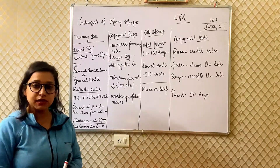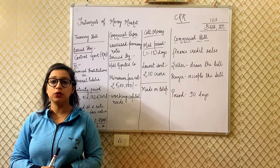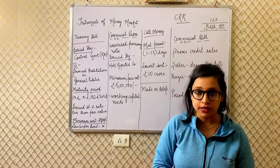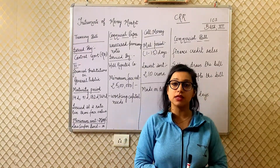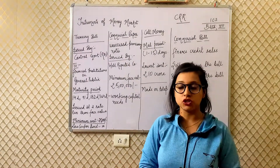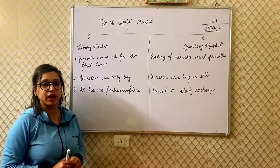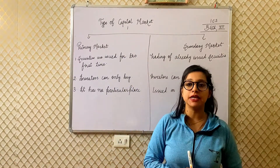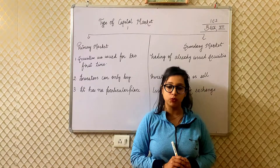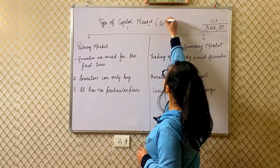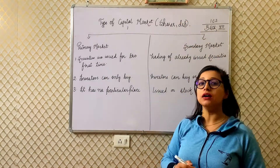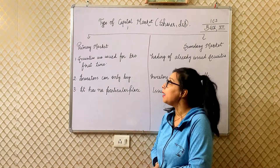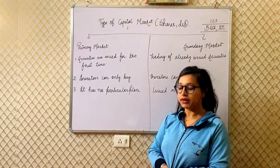Now the last topic of today's video is types of capital market. Capital market is the market that deals in financial securities with maturity period more than one year, like shares and debentures issued by companies. Capital market is divided into two types: primary market and secondary market.